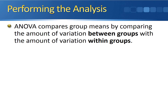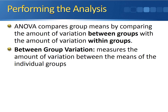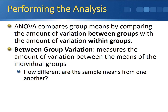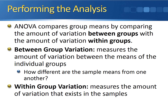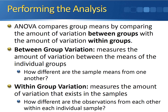Performing the analysis for an ANOVA is a little bit complicated. ANOVA compares group means by comparing the amount of variation between groups with the amount of variation within groups. So even though we're looking to compare group means, we're actually using variances to calculate our test statistic. The between-group variation measures the amount of variation between the means of individual groups — how different are the sample means from one another. The within-group variation measures the amount of variation that exists within the samples — how different are the observations from one another within each individual sample.